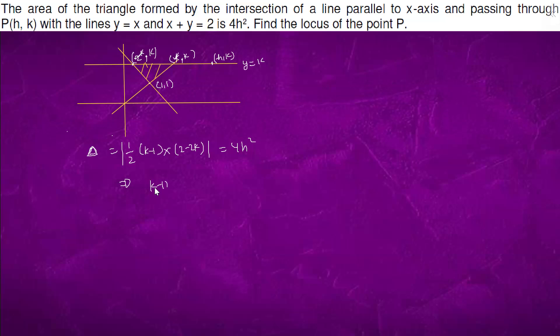So we have k minus 1 times 2 minus 2k equals to 4h squared. So we can say that k minus 1 whole squared equals to 4h whole squared.